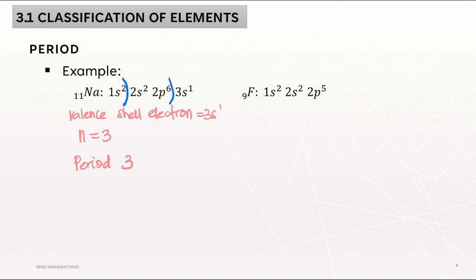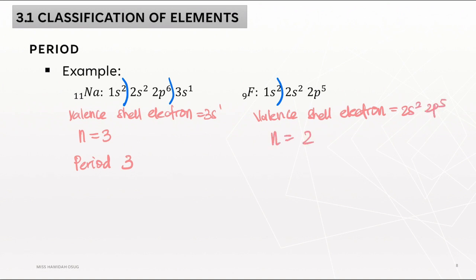Next, for fluorine: we draw the border and we can see the valence electron shell is 2S2, 2P5. Therefore, the highest principal quantum number is N equals 2, and fluorine belongs in period 2.